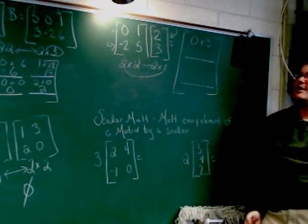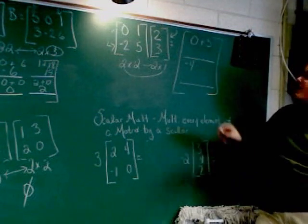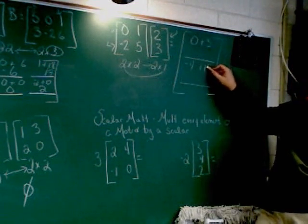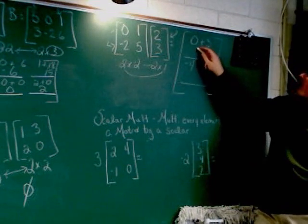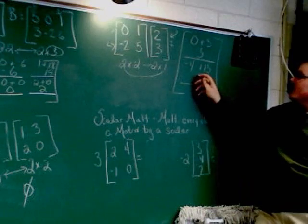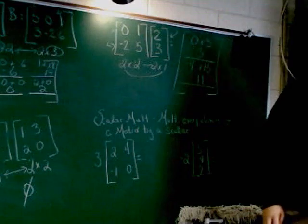Negative 2 times 2. 5 times 3, 15. All right. So we add them up. 0 and 3, 3. Negative 4 and 15, 9. 11. 11. All right.